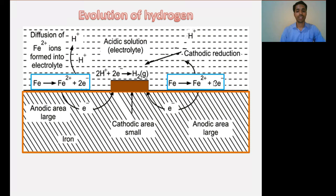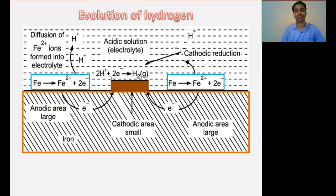These electrons will be transferred from the anodic area to the cathodic area through the metal. On the cathodic area, the electrons will be captured by H⁺ ions from the surrounding electrolyte. Since this is an acidic solution, it contains H⁺ ions, and these H⁺ ions on the cathodic area will accept the two electrons to give hydrogen gas. So hydrogen gas will bubble on the cathodic areas, and on the anodic part, metal will get dissolved.